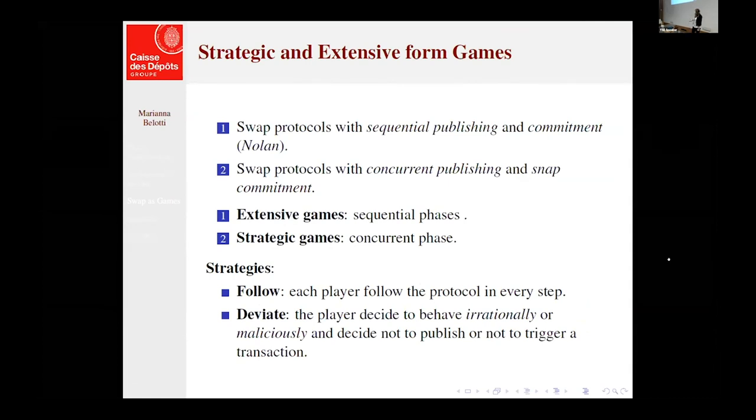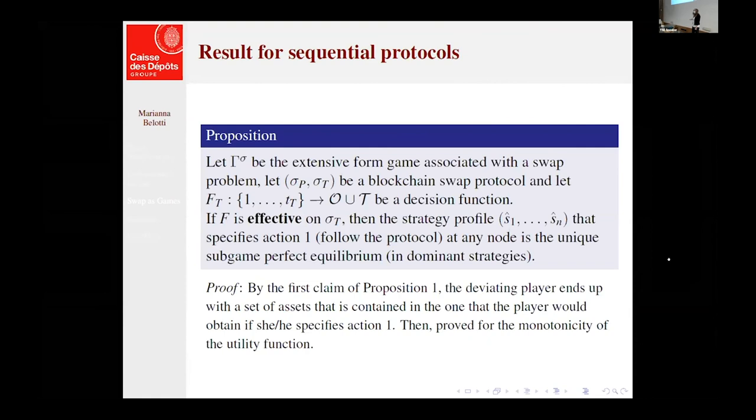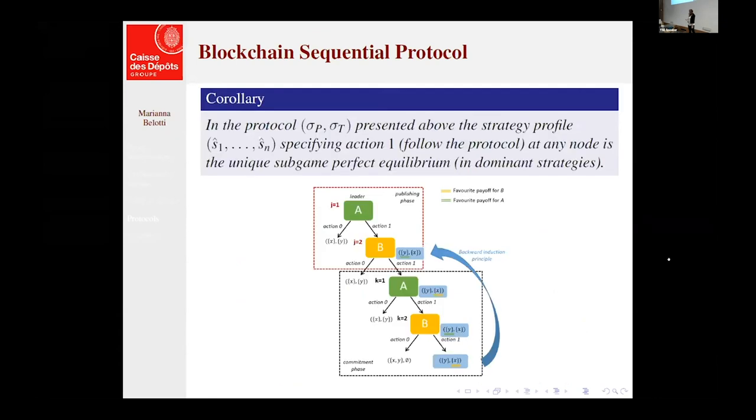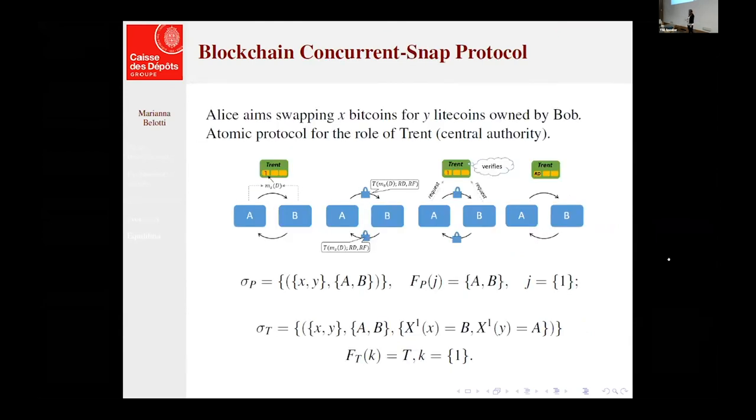So first example of sequential protocol is the one proposed by Nolan and generalized by Hurley. And in this case, we can see that our formalization actually formalizes and characterizes this protocol. We can see from J and K that we have two steps. So it's sequential and the result that I presented so far, action one, so following the protocol is a subgame perfect Nash equilibrium.